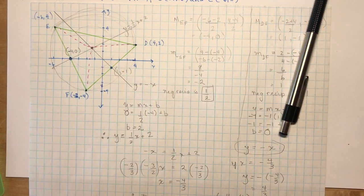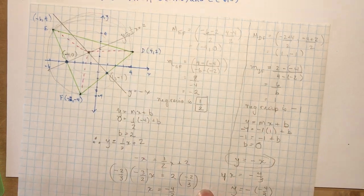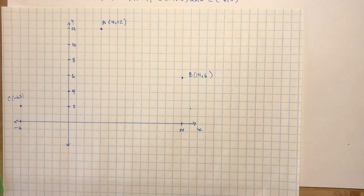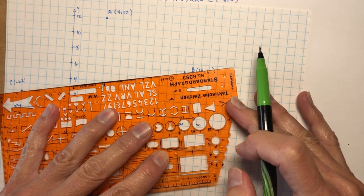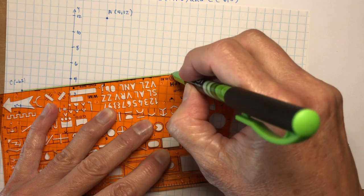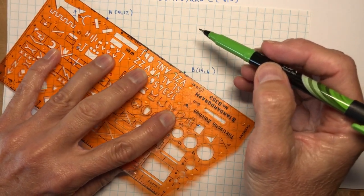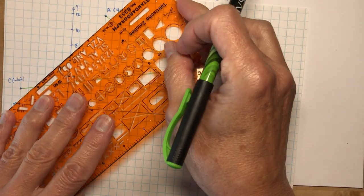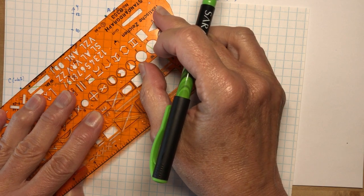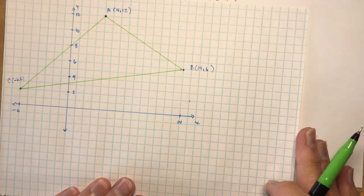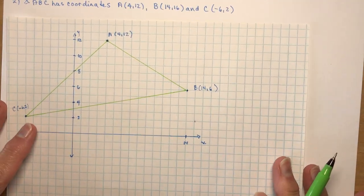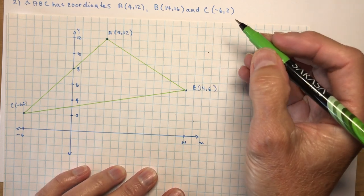Now for the second example — you might want to try it yourself and then come back. Triangle ABC has coordinates A(4, 12), B(14, 6), and C(-6, 2). I chose this example because its circumcenter is outside the triangle. We'll find midpoints, then perpendicular bisectors, and find where they intersect — it's a lengthy calculation that takes quite a bit of time.